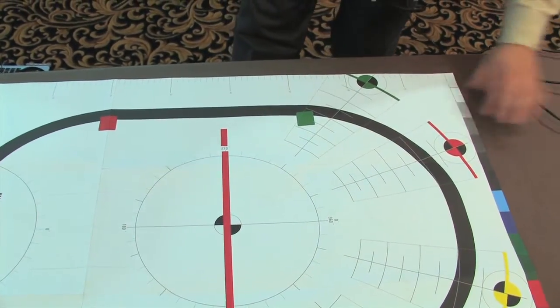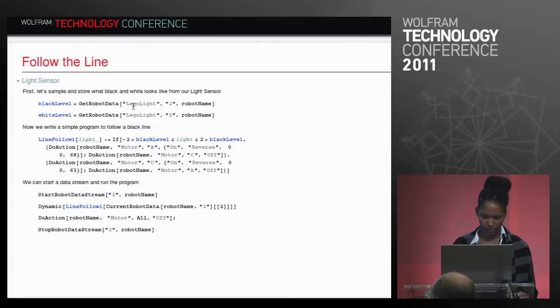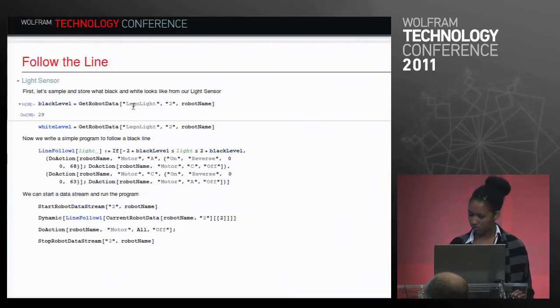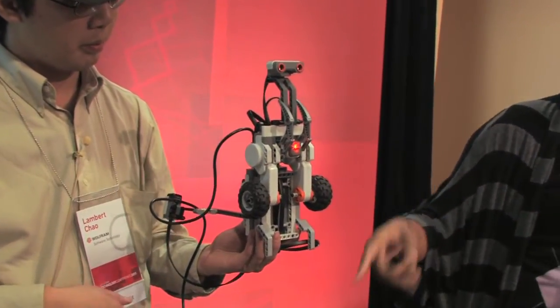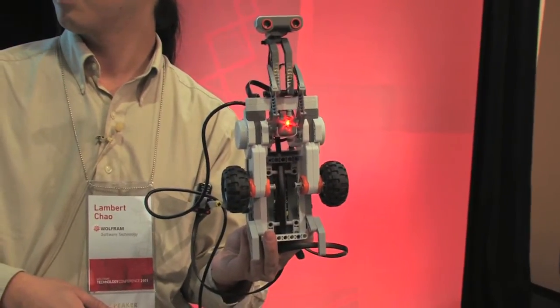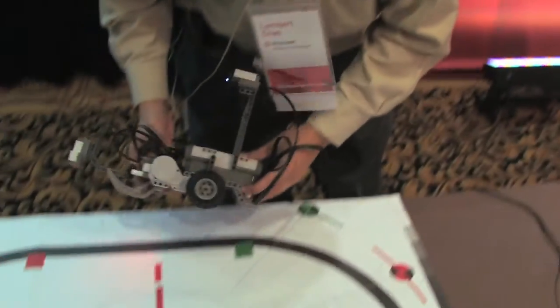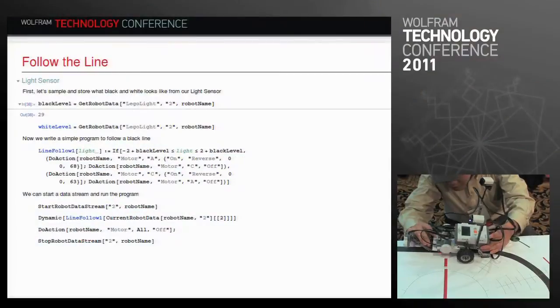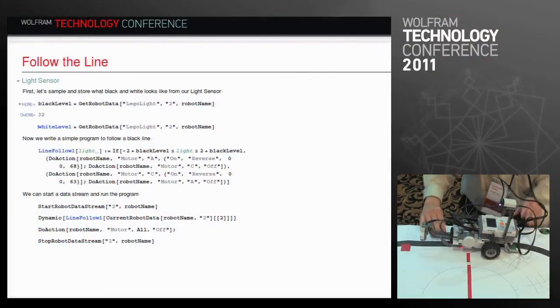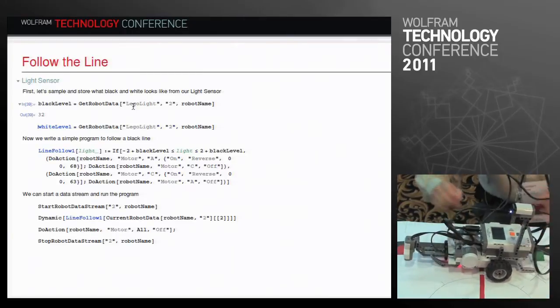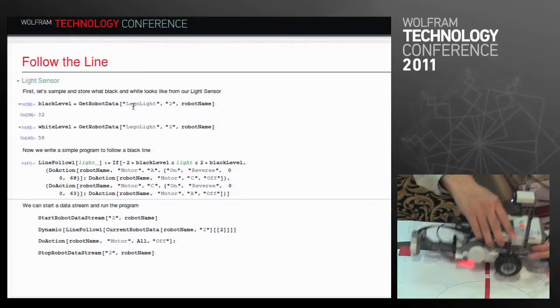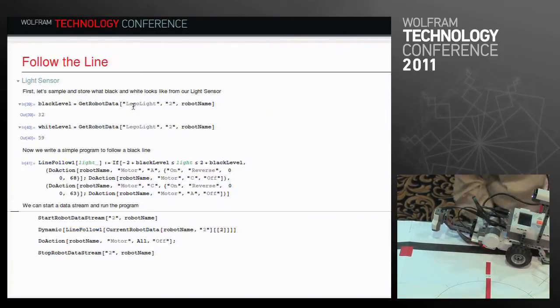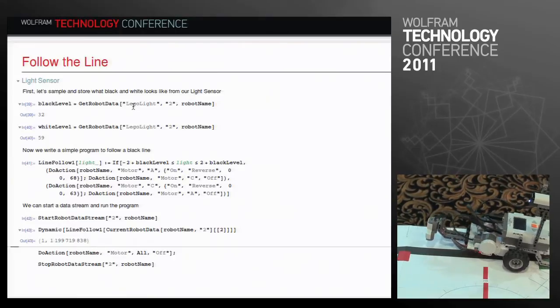And now what we want to do is we want to sample, we want to know what black is. We have a color sensor. We have a light sensor at the bottom, and we're going to place it on the track. We start off by sampling black, the black level, and then the white reading. And we just write a really simple program to follow the line. Start off a data stream and put the program in the dynamic.